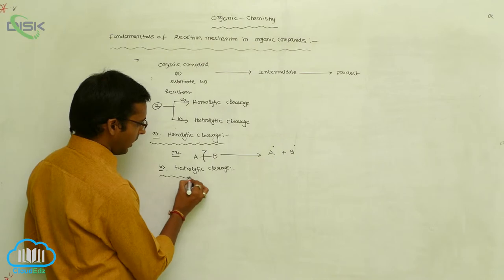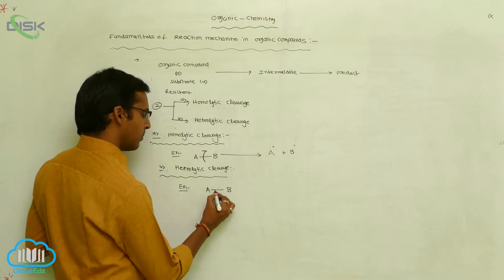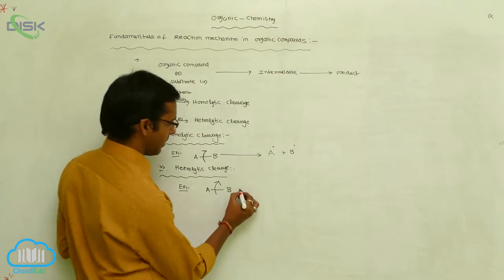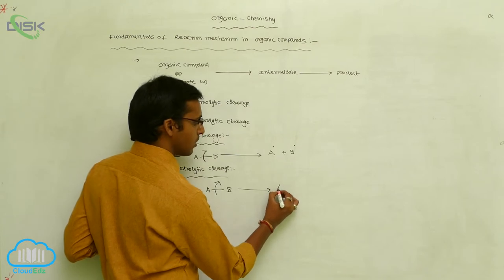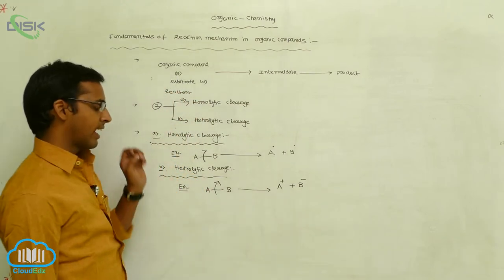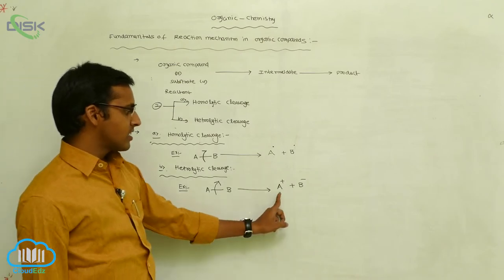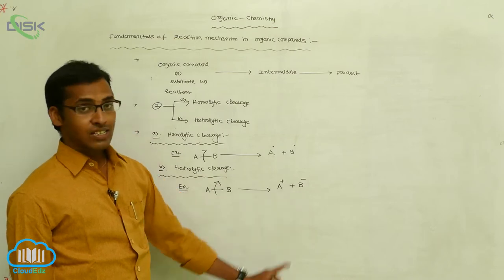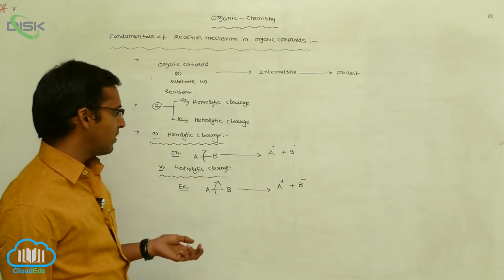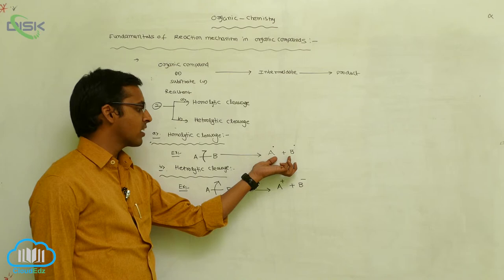Heterolytic cleavage means this sigma bond undergoes a full arrow — that is the full arrow representation. In heterolytic cleavage, it produces a cation and an anion — two types of charged particles. One is a cation particle and the other is an anion particle. The cation contains a sextet in its valence, and the anion contains an octet in its valence. During heterolytic cleavage, ions are formed, whereas in homolytic cleavage, two radicals with unshared electrons are formed.